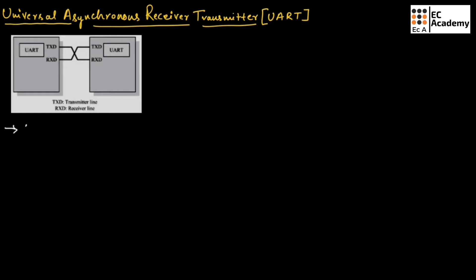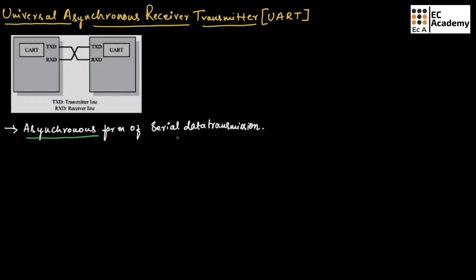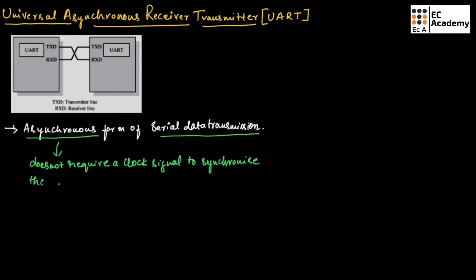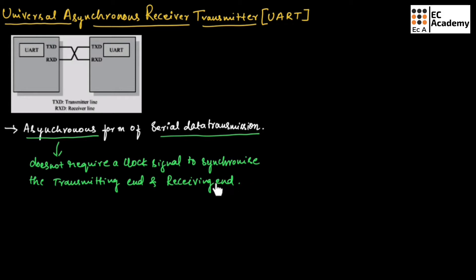UART is used for asynchronous form of serial data transmission, which means UART does not require a clock signal to synchronize the transmitting end and receiving end for serial data transmission.